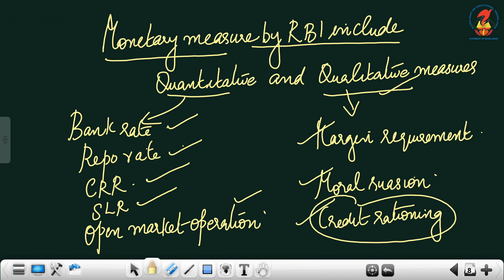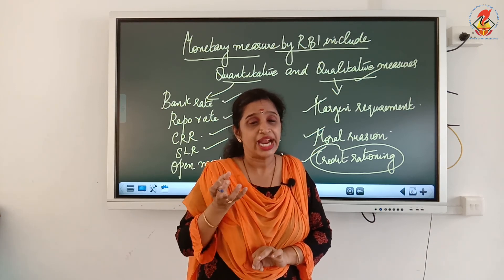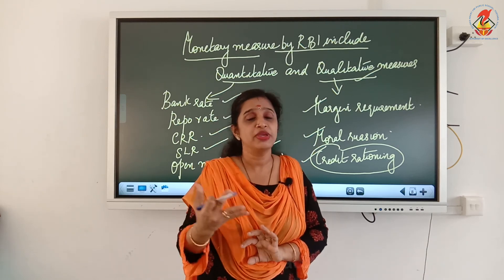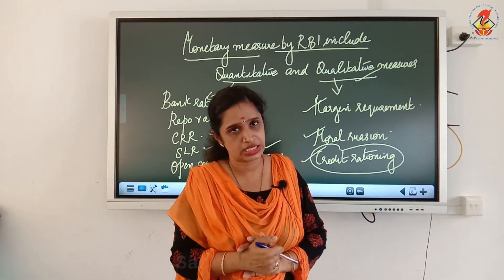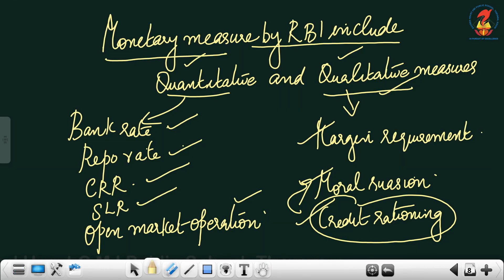Qualitative measures consist of margin requirement, moral suasion, and credit rationing. Credit rationing means RBI advises commercial banks not to give loans to certain sectors during the time of inflation. It is almost similar to moral suasion. The same explanations from money and banking apply here for what to do with bank rate, repo rate, CRR, SLR, and open market operations during both excess demand and deficient demand.